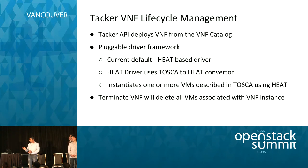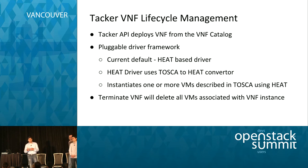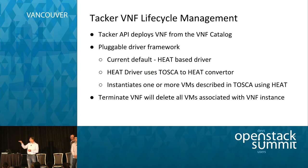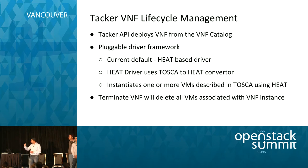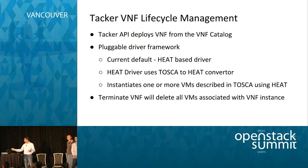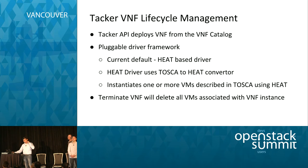Once the template is ready in the Tacker database, you use the Tacker API to instantiate. We want to make this a flexible framework. The current driver of choice is Heat. Just like Neutron and Nova, one mechanism doesn't fit all — that's why many of these are pluggable. The Heat driver automatically converts the Tacker TOSCA template to Heat on the fly and instantiates the VMs on Nova and Neutron. Terminating a VNF means bringing down all the VMs backing that VNF. We are following NFV standard templating models and using the right components of OpenStack to do it.